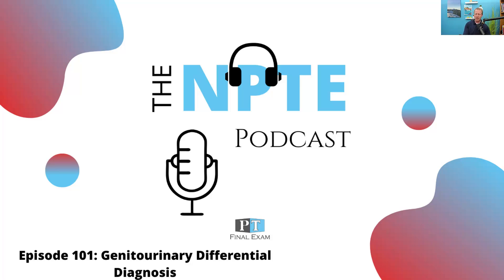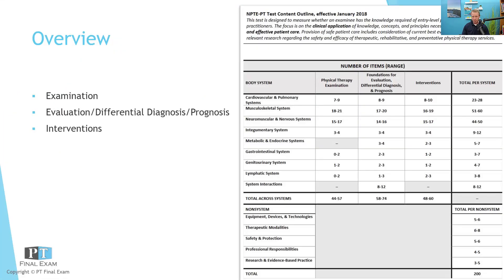Without further ado, let's go ahead and go through our practice question today. This one is related to the genitourinary system. As we recall, there are just a handful of questions on the genitourinary system — about four to seven questions. Definitely something to study proportionately, meaning you're studying the big three systems most of the time, but don't forget about these other systems. So let's go ahead and go through our practice question.